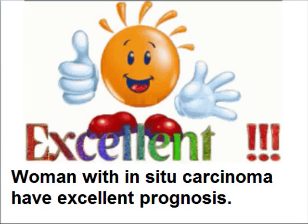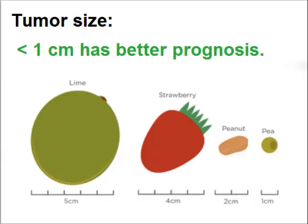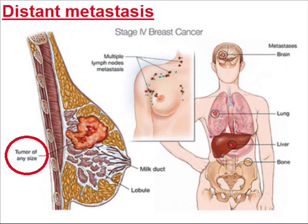The presence of carcinoma in situ has excellent prognosis because carcinoma arises in the epithelia within the boundaries of a tube. Tubules are lined by basement membrane. Carcinoma in situ remains inside the tubules. When it infiltrates and breaks the basement membrane, it is called invasive breast cancer. In situ is curable with mastectomy. Tumor size less than 1 cm has better prognosis.